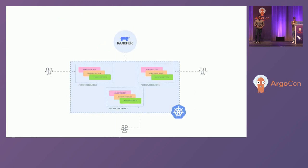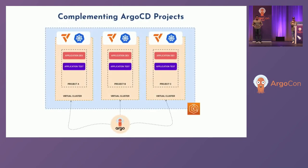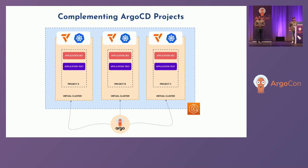In scenarios where companies prefer a single host cluster, you can make use of something like vClusters, which gives you the concept of separate Kubernetes clusters but in a virtual context. You can run all of them on a single host cluster and still use Argo CD to deploy to these different downstream clusters. That's what Calvin is now going to demonstrate.